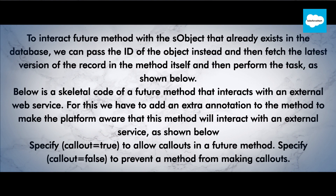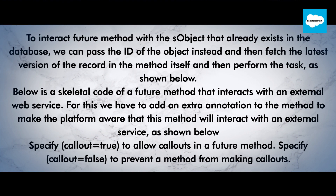To interact a future method with an sObject that already exists in the database, we can pass the ID of the object instead and then fetch the latest version of the record in the method itself and then perform the task as shown below.